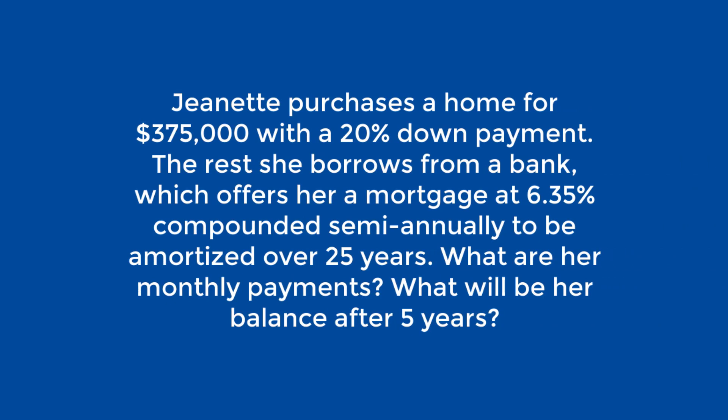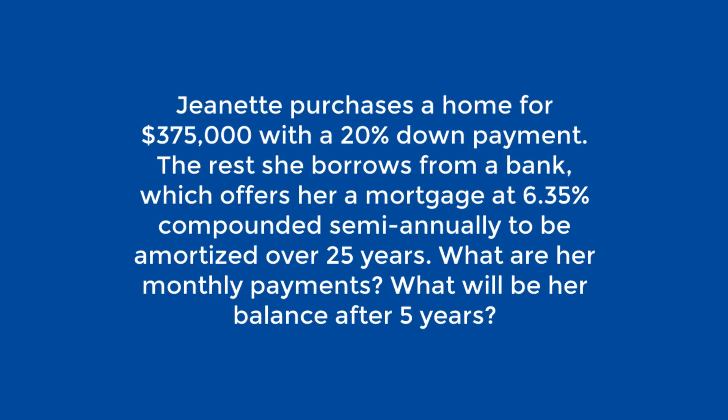Jeanette purchases a home for $375,000 with a 20% down payment. The rest she borrows from a bank, which offers her a mortgage at 6.35% compounded semi-annually and is to be amortized over 25 years. What are her monthly payments? What will be her outstanding balance after five years?